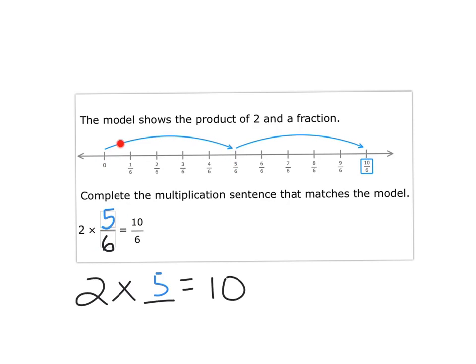I can also use this number line to help me figure it out. If you notice the first fraction they landed on was 5/6, then they're going to do that again twice. Once, twice, that's 2 times to get 10 sixths.